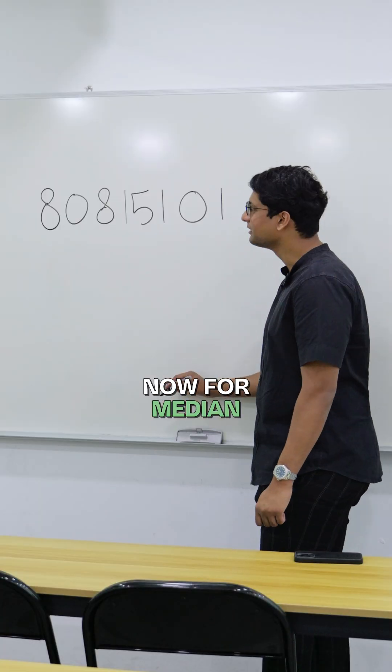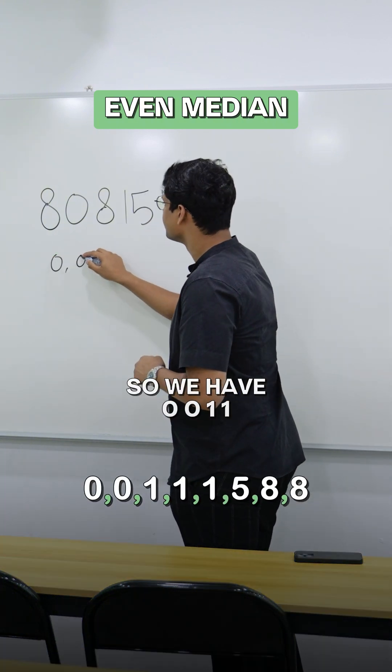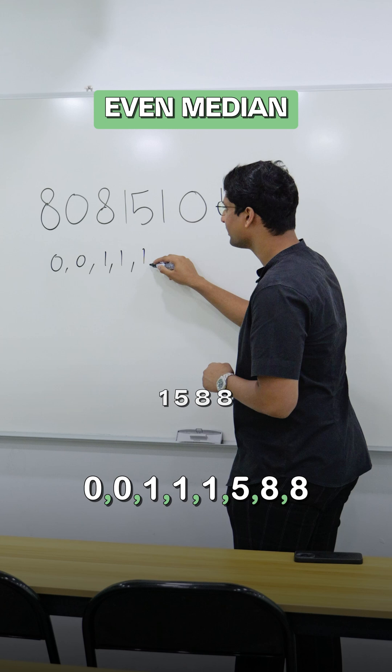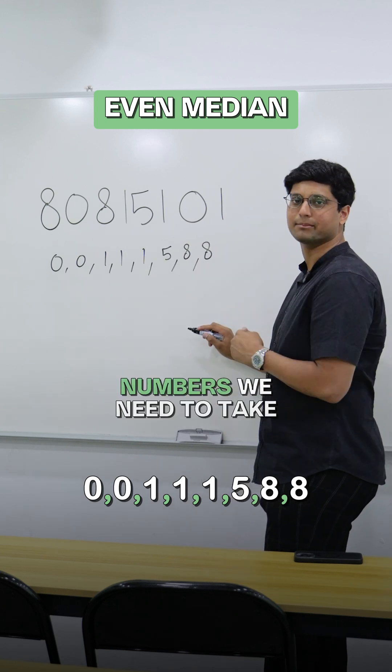Now for median. For median, we need to arrange all the numbers in ascending order. So we have 0, 0, 1, 1, 1, 5, 8, 8. To find median for even numbers,